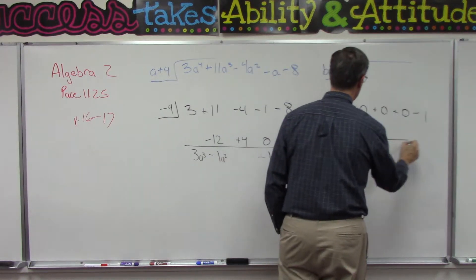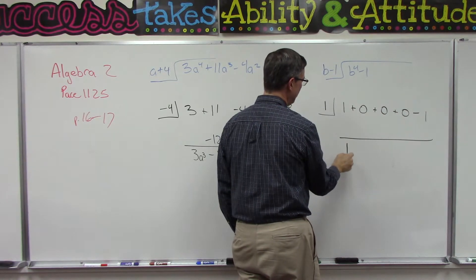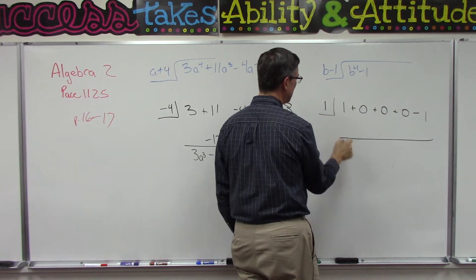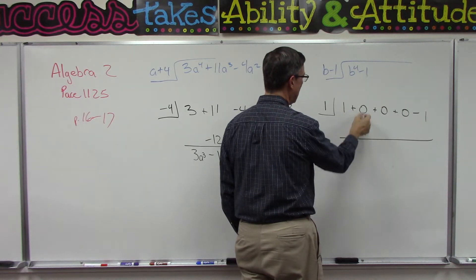We draw a line. This is the opposite of this one. We're going to bring this straight down. Now we're going to multiply this times this: 1 times 1, bring it up here. We have 1, add these and we get 1.